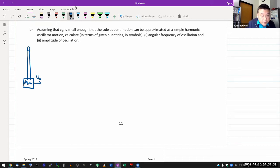So after collision, what you basically have is a combined mass of M plus M, that has some initial velocity V naught. And it's saying, assume that this is small enough, that the subsequent motion can be approximated as a simple harmonic oscillator motion.